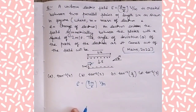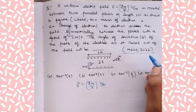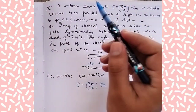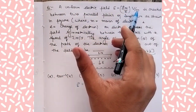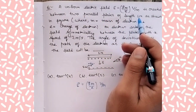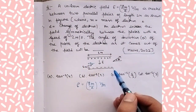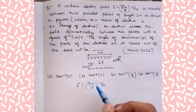Hello friends, in this video let's solve a problem which was asked in JEE 2022. A uniform electric field of E = 8m/e volt per meter is created between two parallel plates of length one meter.